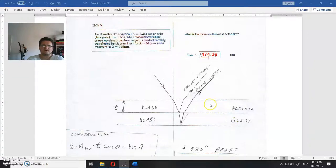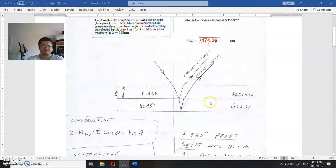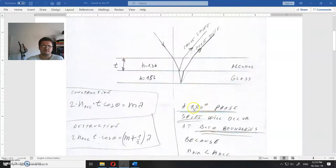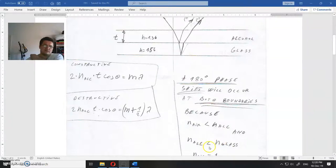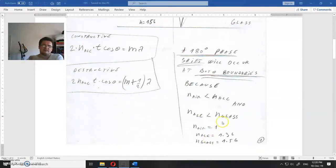Minimum thickness of the film - I wrote it here. A 180-degree phase shift will occur at both boundaries because n_air is smaller than n_alcohol, and n_alcohol is smaller than n_glass.